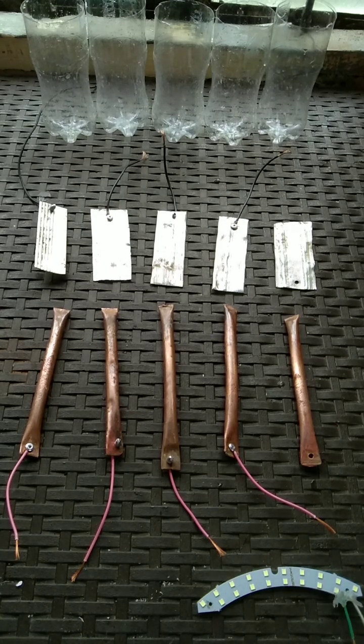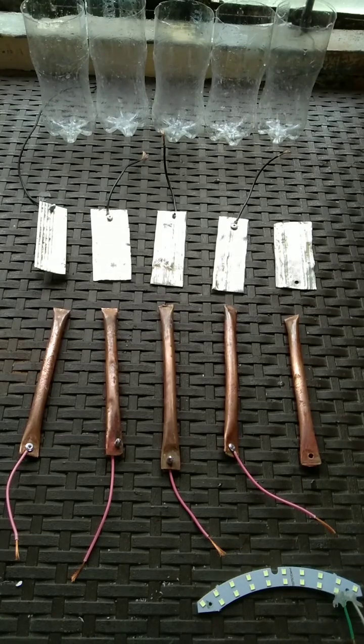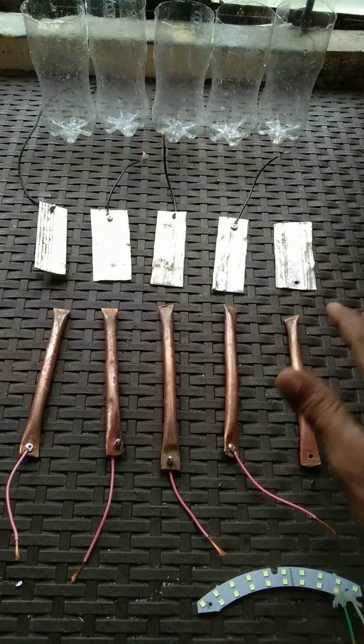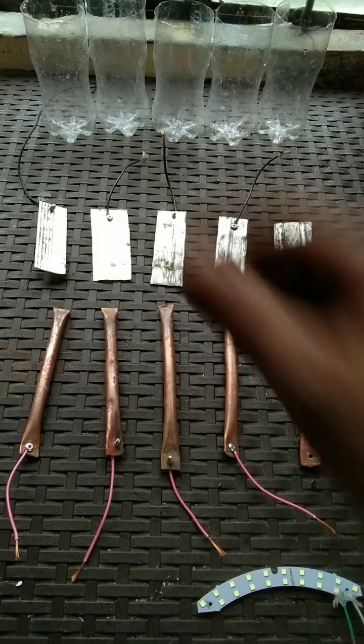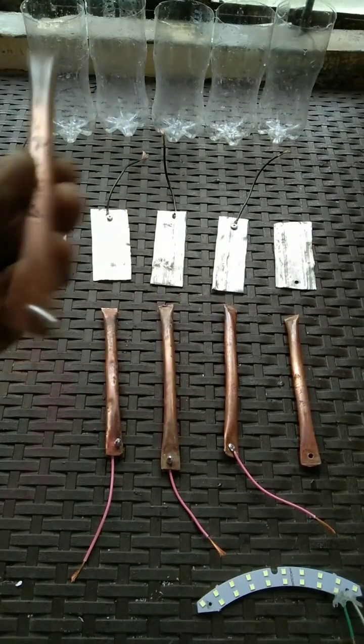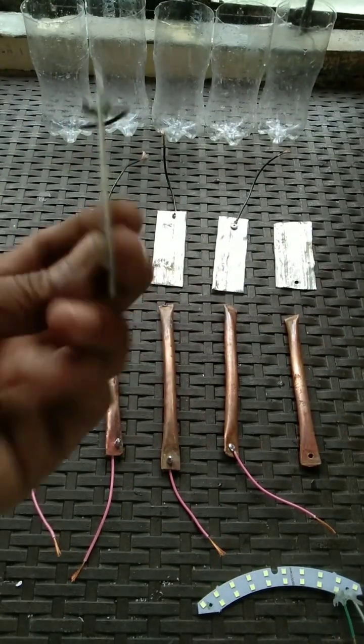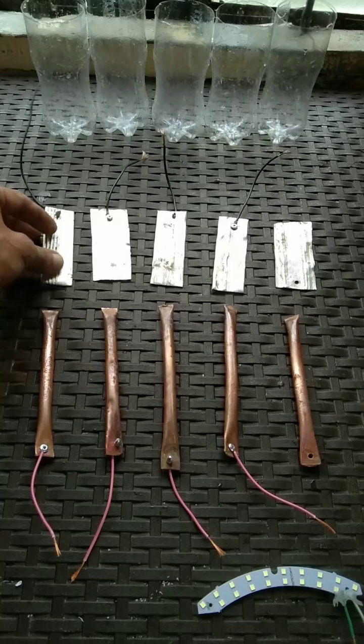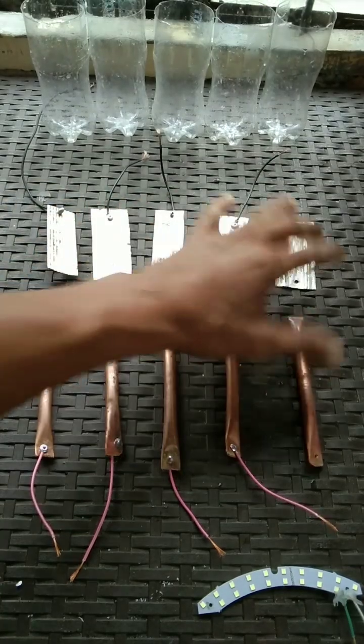As you can see, we have a copper tube here at least 6 inches long and aluminum plate 3.5 inches long. This is a copper tube as the positive and aluminum plate as the negative or anode, while the copper is the cathode.